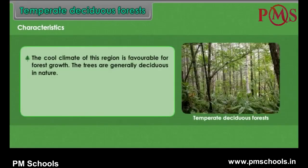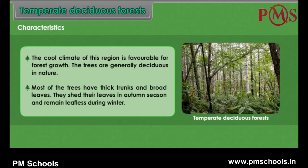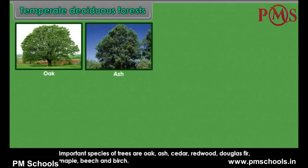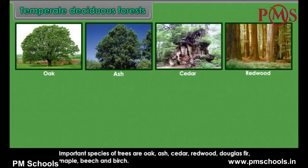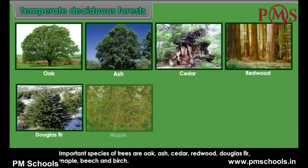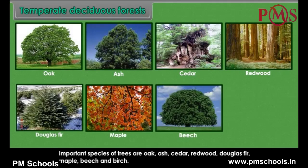Characteristics: The cool climate of this region is favourable for forest growth. The trees are generally deciduous in nature. Most of the trees have thick trunks and broad leaves. They shed their leaves in autumn season and remain leafless during winter. Important species of trees are Oak, ash, cedar, redwood, Douglas fir, maple, beech and birch.